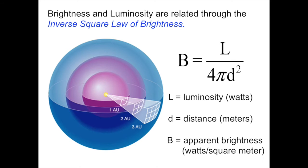The relationship between brightness and luminosity is in terms of what is called an inverse square law of brightness. We've seen inverse square law before. We saw the inverse square law of gravitation. The gravitational force falls off as one over the distance squared. The same thing is occurring in the law of brightness. The apparent brightness of an object, B, is equal to its luminosity, L, divided by 4π times the distance from the source squared.